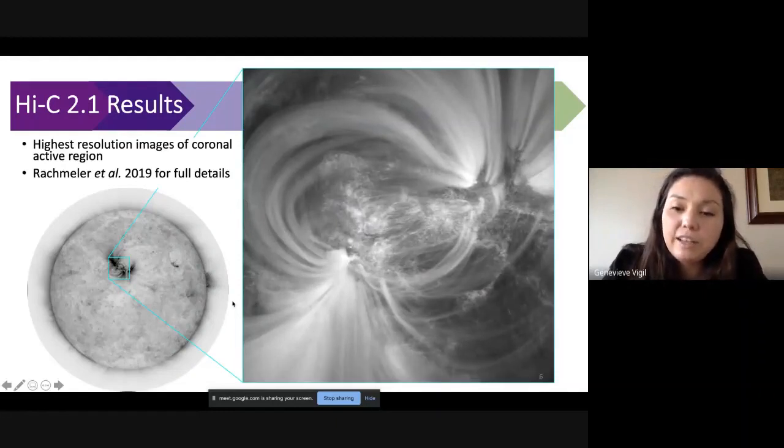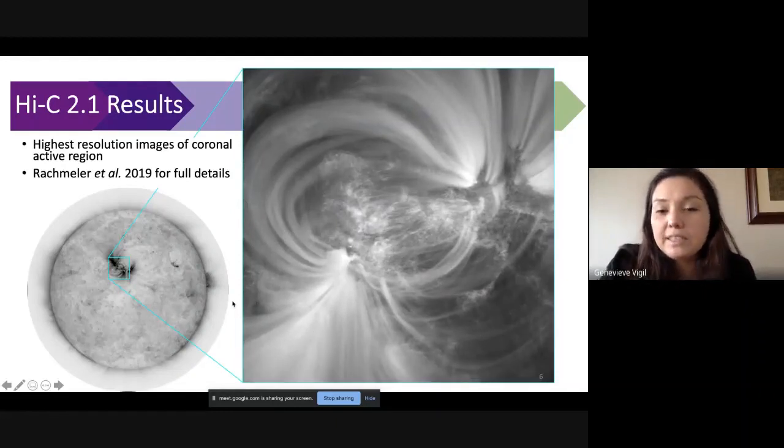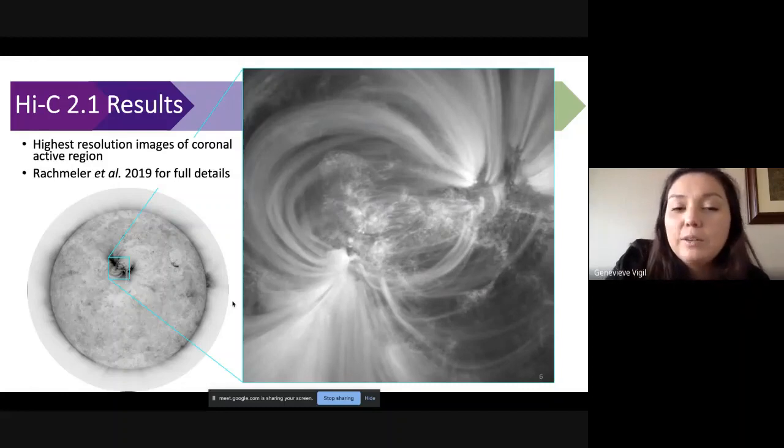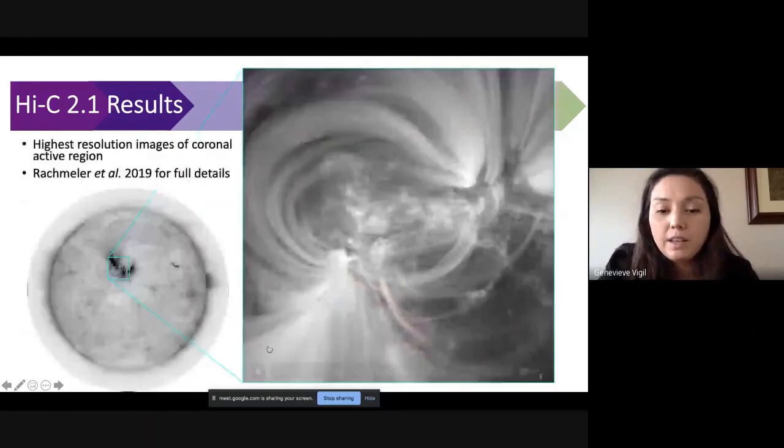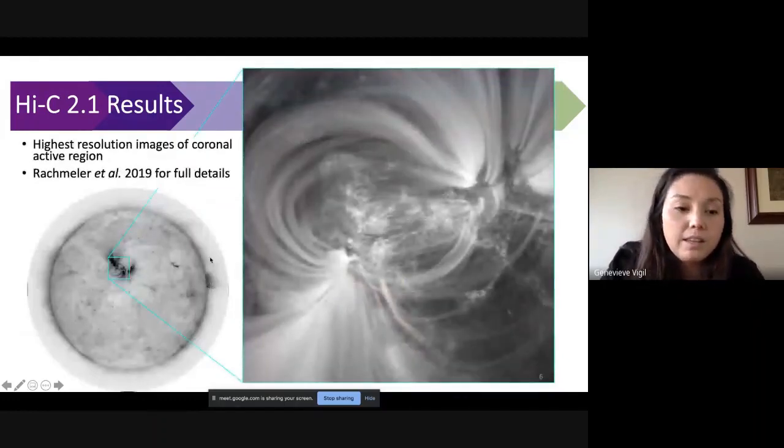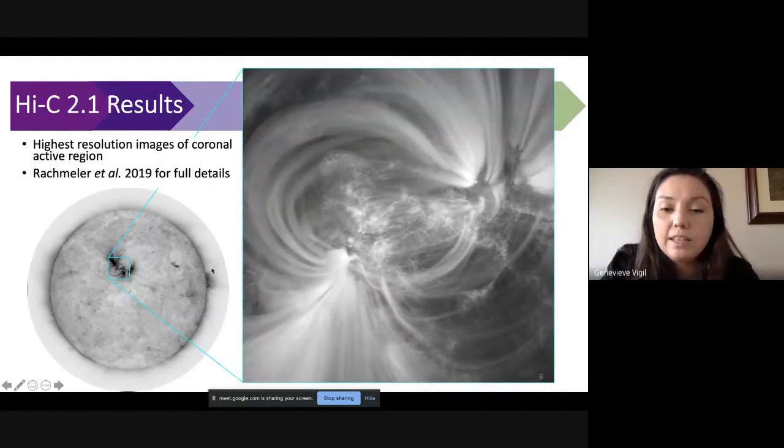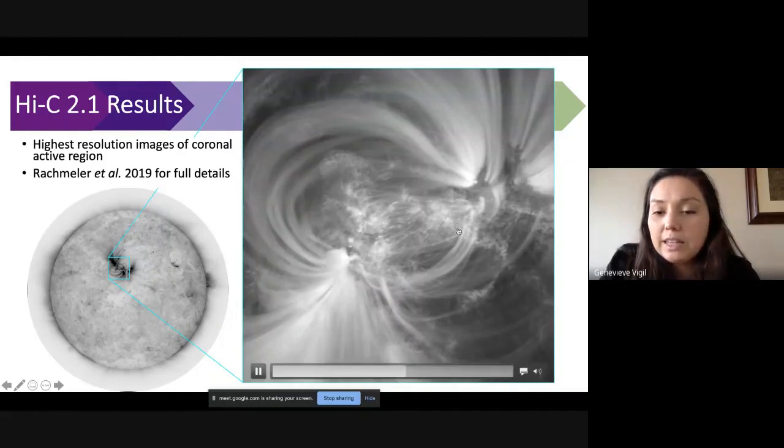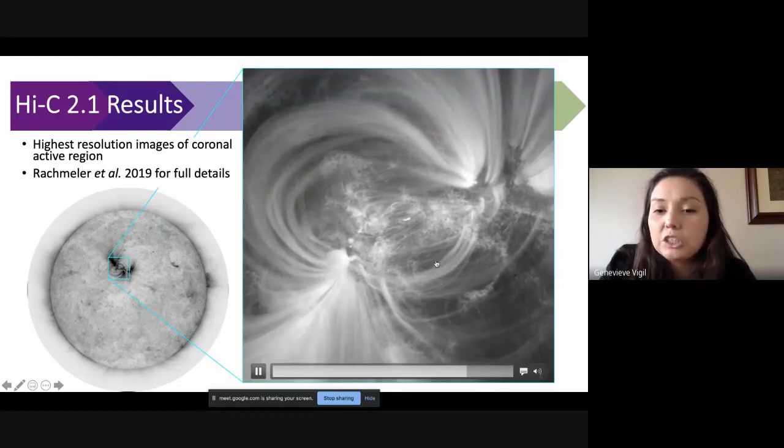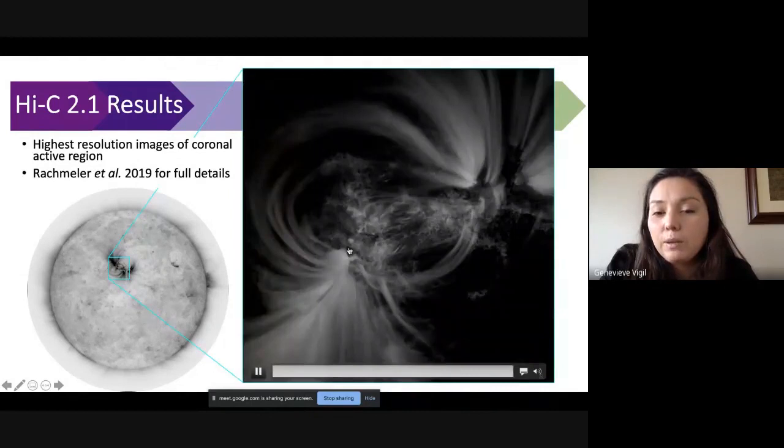Here is the full data set during flight from Hi-C 2.1. Here is the AIA full disk image just for context and here is the field of view that Hi-C imaged during that flight. So you can see we really did get some very beautiful images of this beautiful active region during flight. We got some loop structure. We got a lot of fine scale moss structure. We were able to see a lot of interesting brightenings in this region.